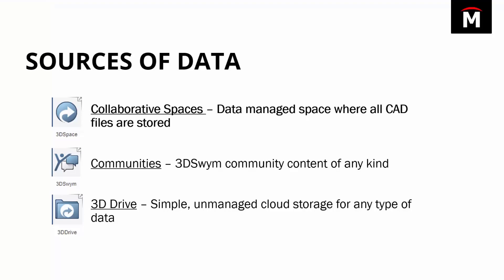Communities could be a post or an image inside of a post, something like that. The third one is 3D Drive — this is just simple unmanaged cloud storage space. It could even be installed inside Windows Explorer and you can really put any type of file in here, but maybe not as important or as large as what you'll have inside of collaborative spaces.